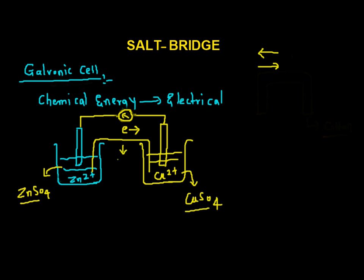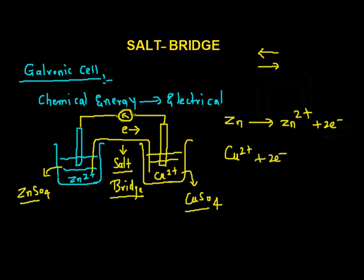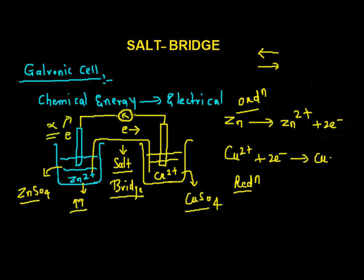This is the salt bridge. Now the question comes: why do we need to use the salt bridge? What will happen if we do not use it? We know that two reactions are taking place — zinc is getting oxidized into Zn2+ plus two electrons. At the same time, copper ion is accepting two electrons in another compartment and getting reduced to copper. As the reaction starts, the concentration of Zn2+ ion will increase in this compartment, and it will not allow the electrons to move. So this cell will stop working soon.